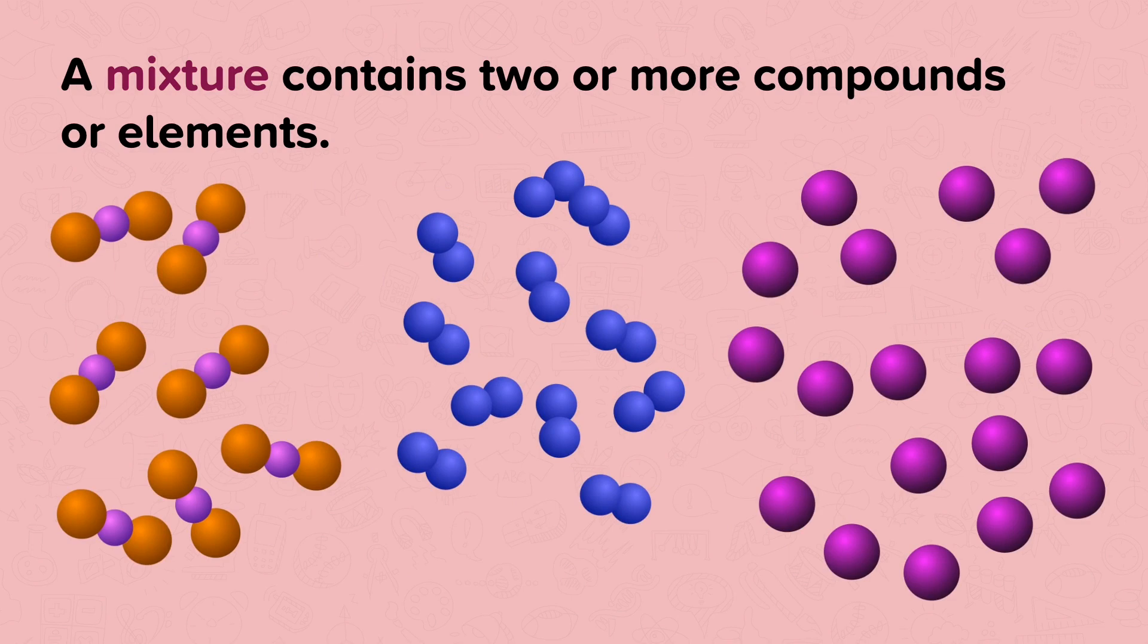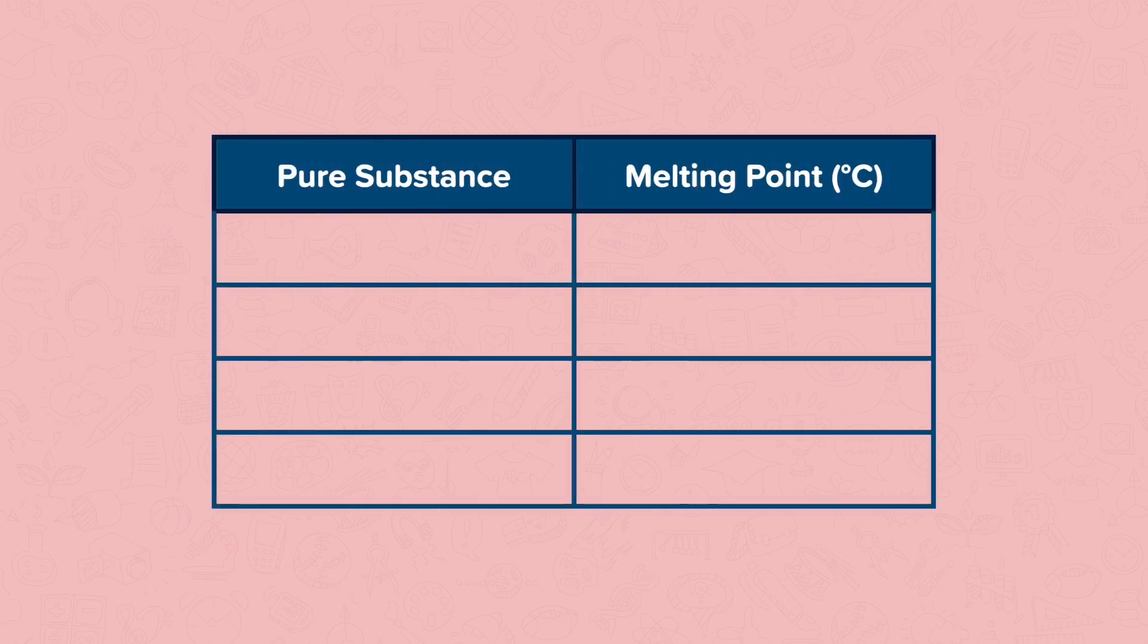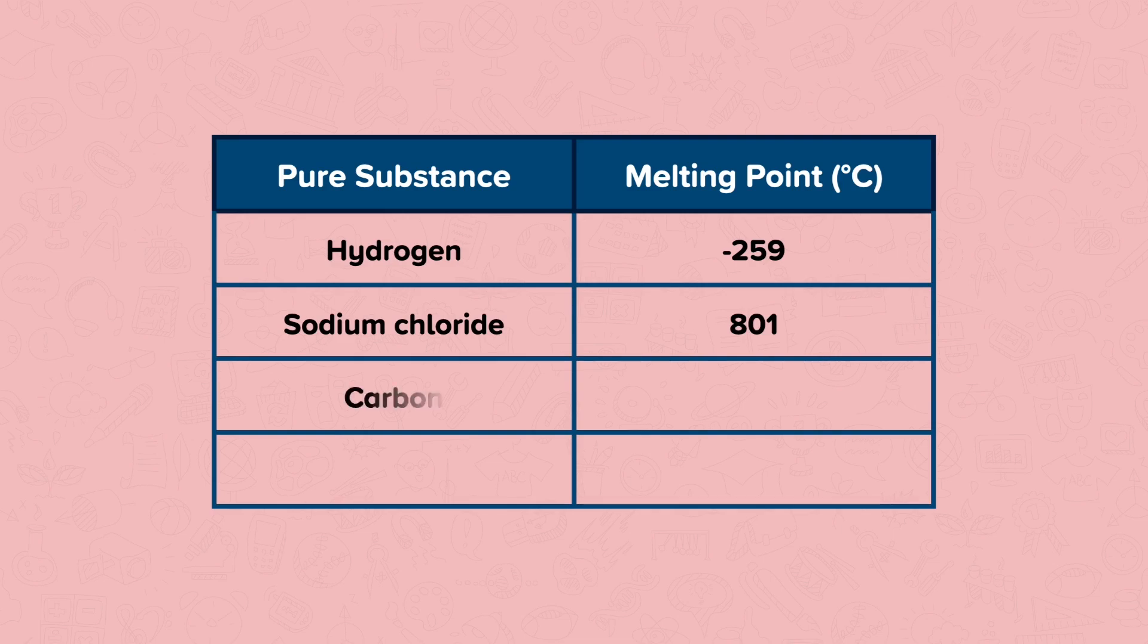A chemically pure substance will melt and boil at a specific temperature. Let's look at some examples of melting points. Hydrogen melts at minus 259 degrees C. Sodium chloride melts at 801 degrees C. Carbon at 3550 degrees C. And iron oxide at 1565 degrees C.